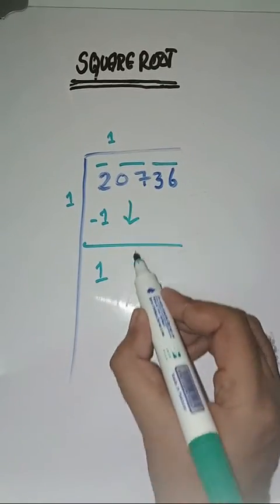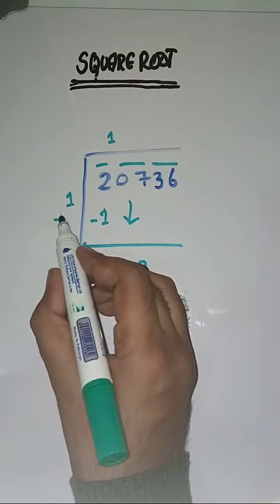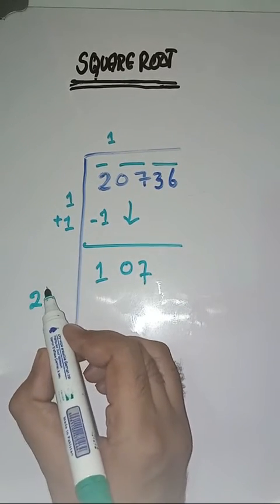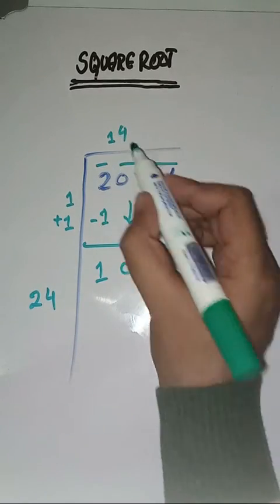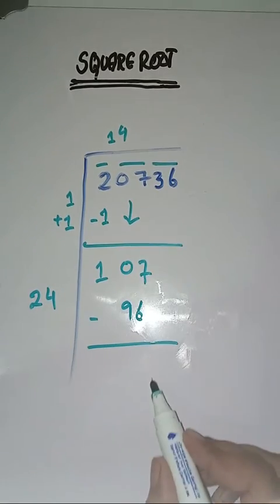Now we take four. Twenty-four fours are ninety-six. Seventeen minus six equals eleven. Next pair, thirty-six is coming. So twenty-four plus four equals twenty-eight.